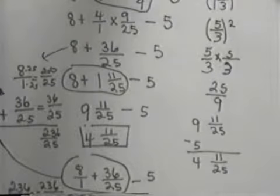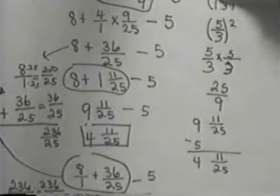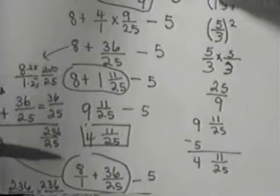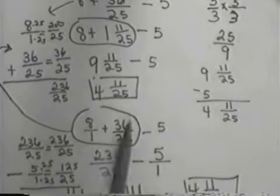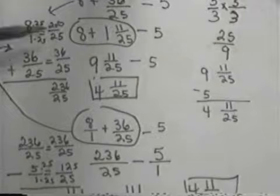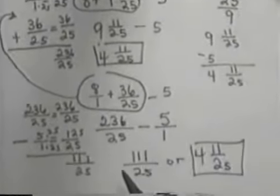If you don't like that, then your other choice is to make everything improper. So you start with this 8 and make it 8/1 plus 36/25. Get common denominators so you can add those. And then make your 5, 5/1.